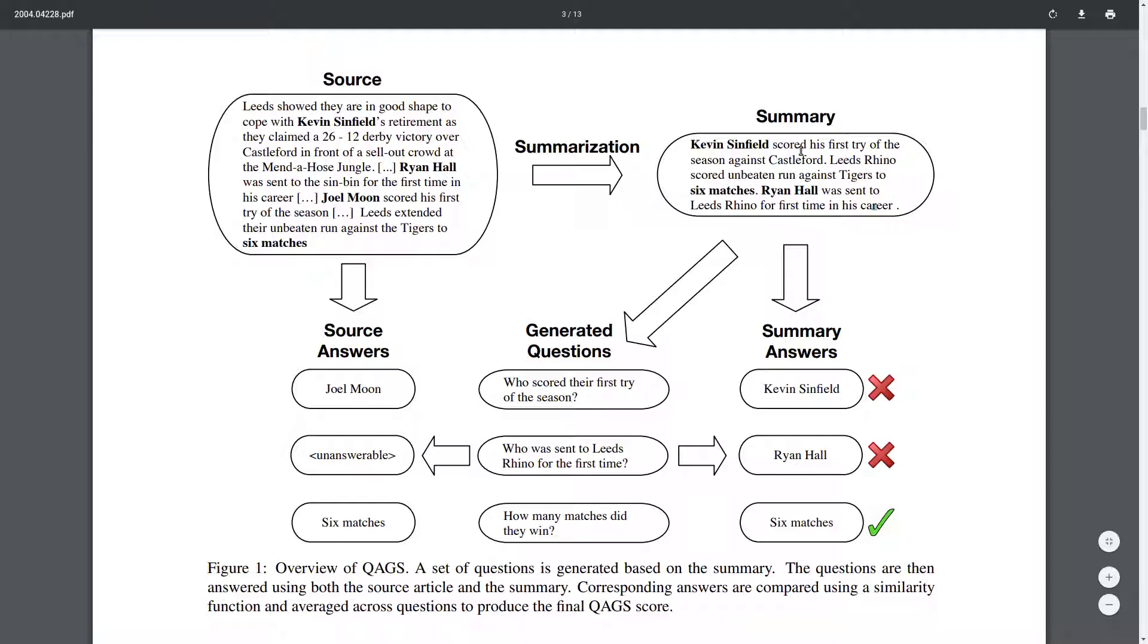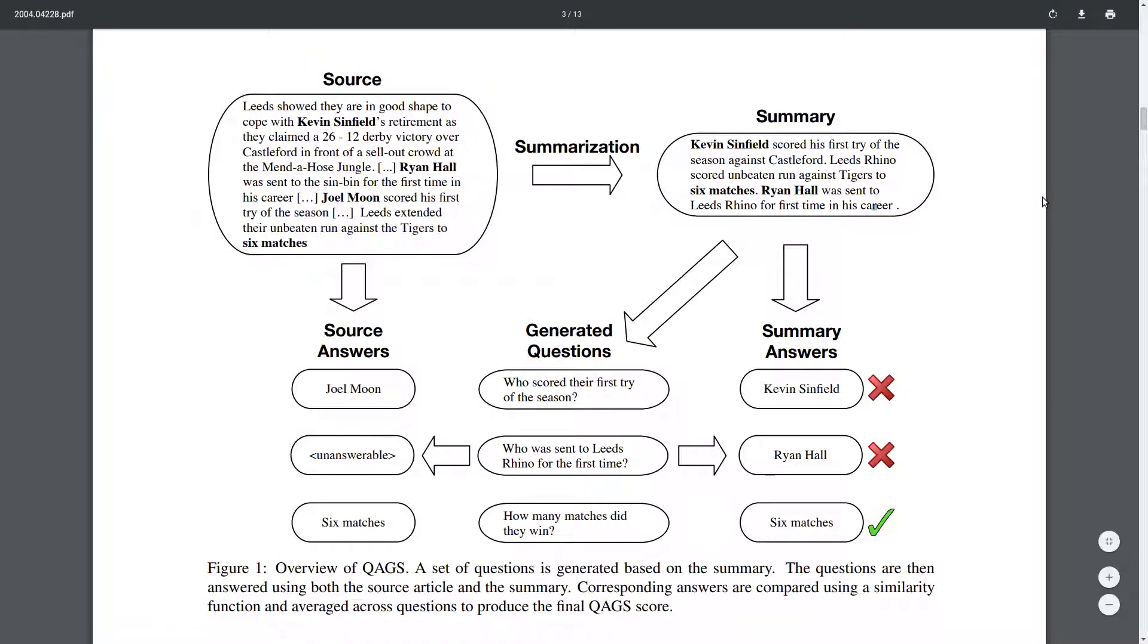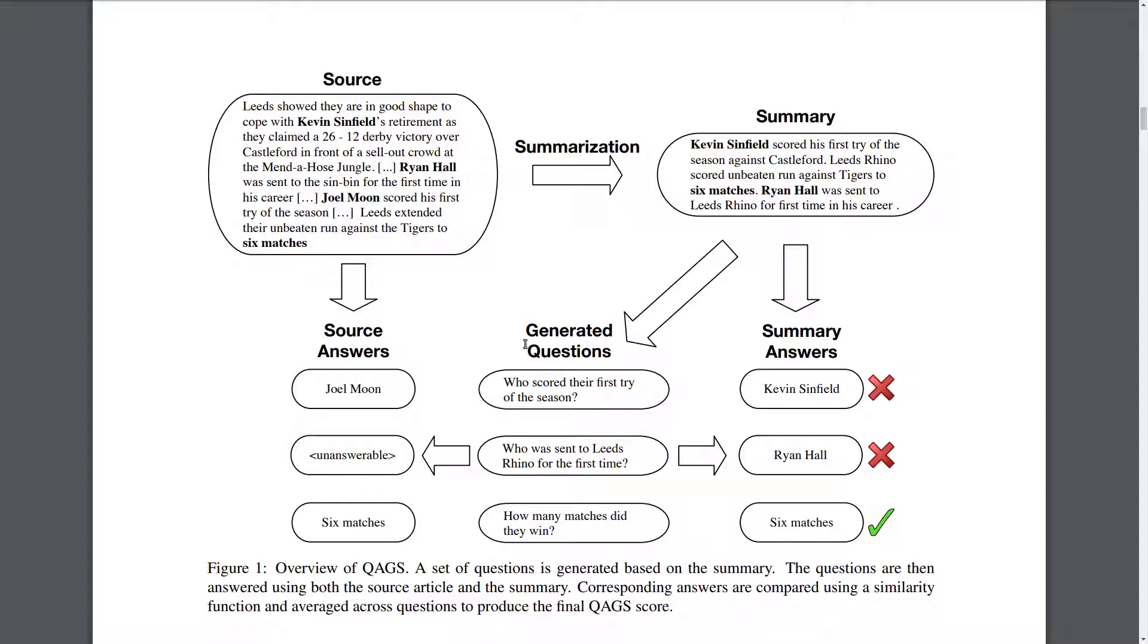The approach of this QAGS evaluation method is as follows. First, you're actually going to be using a question generation model. They're relying on question answering and question generation work done before in the past. They use a question generation model to generate a large number of questions from the summary. Questions like 'who scored their first try of the season', 'who was sent to Leeds Rhinos for the first time', and so on. They generate a large amount of those, let's say 20.